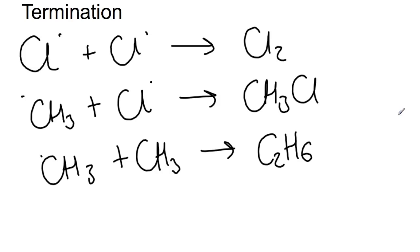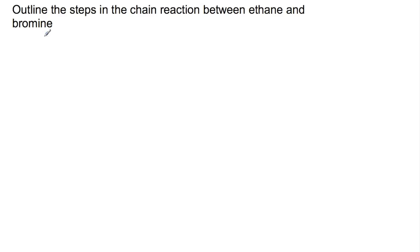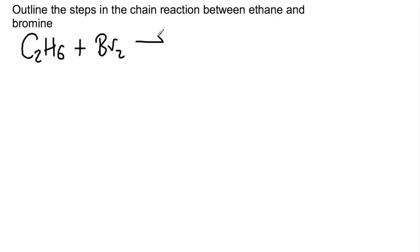You get a very complex mixture of products formed when you have a free radical chain reaction, and any of these products could also go on further to be involved in other free radical chain reactions. Now let's draw out the steps in the chain reaction between ethane and bromine. In a reaction between ethane and bromine, the overall reaction is one of substitution where you're taking ethane plus Br2 and substituting one of the H's for a Br, ending up with C2H5Br plus HBr.